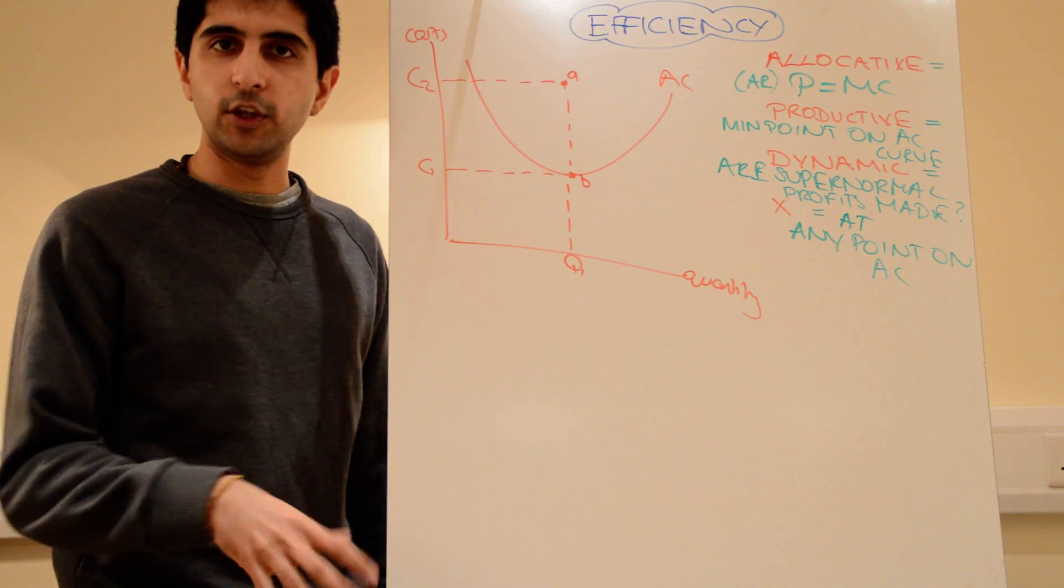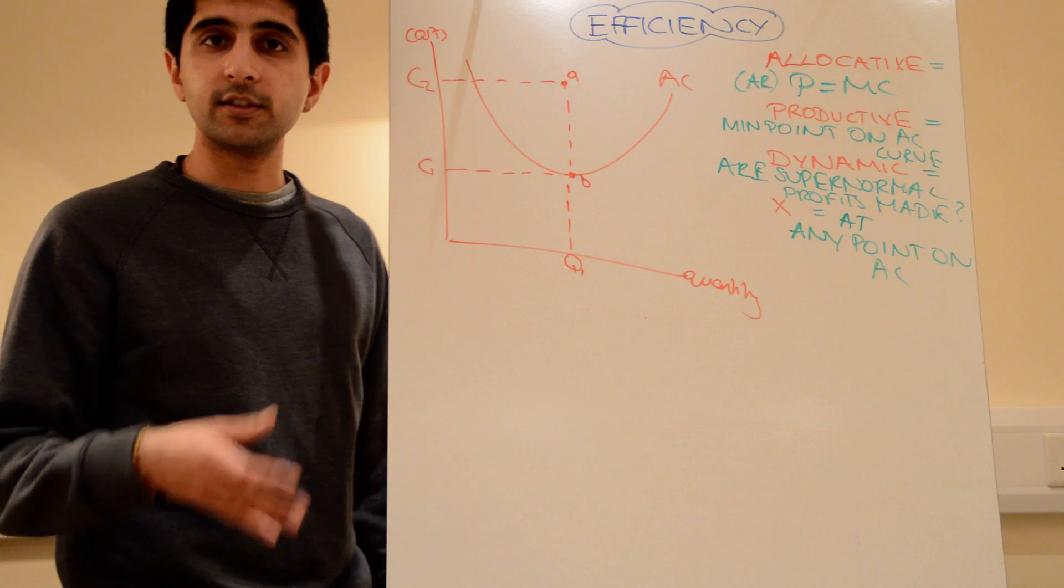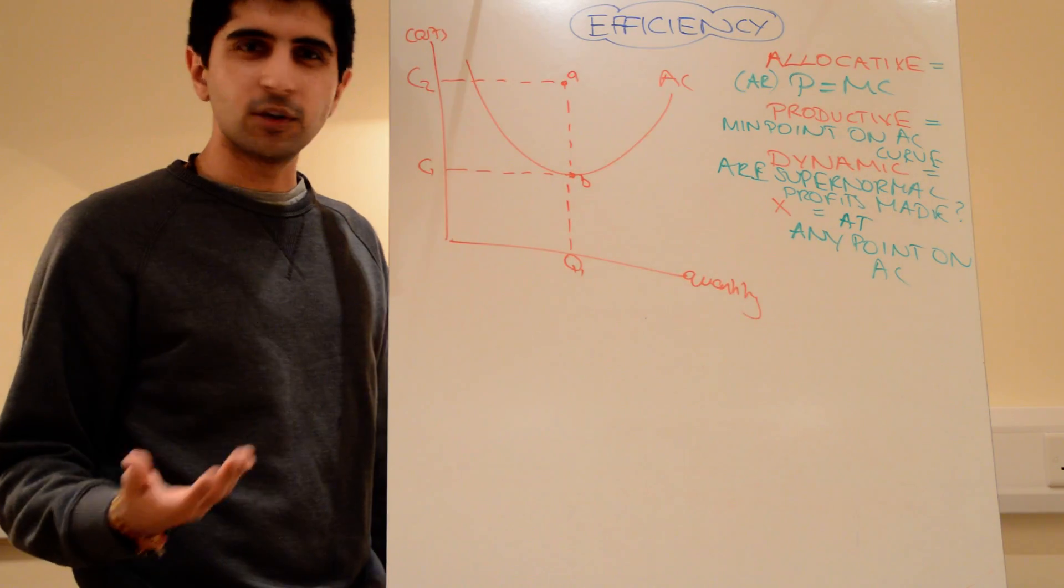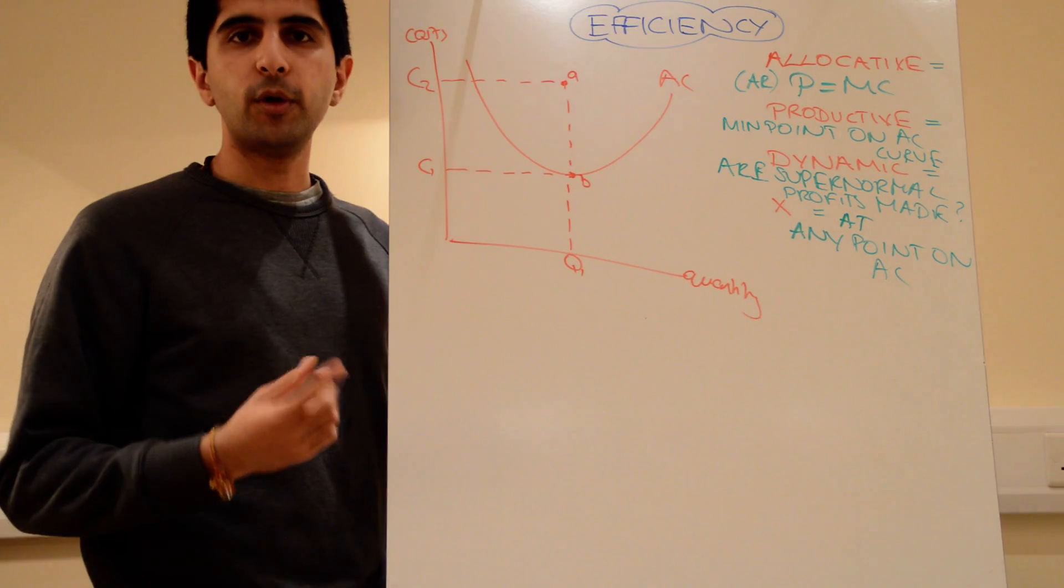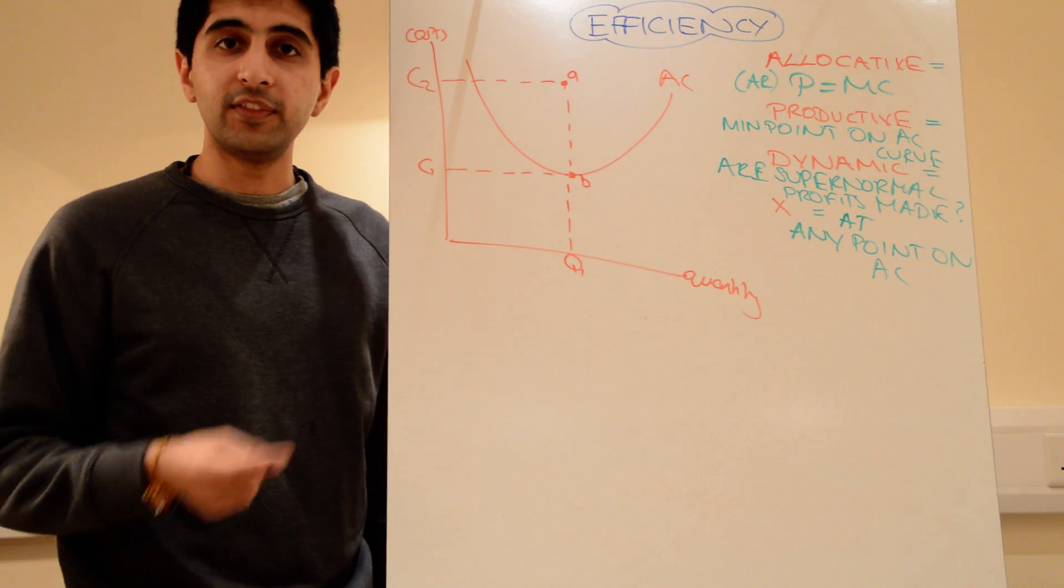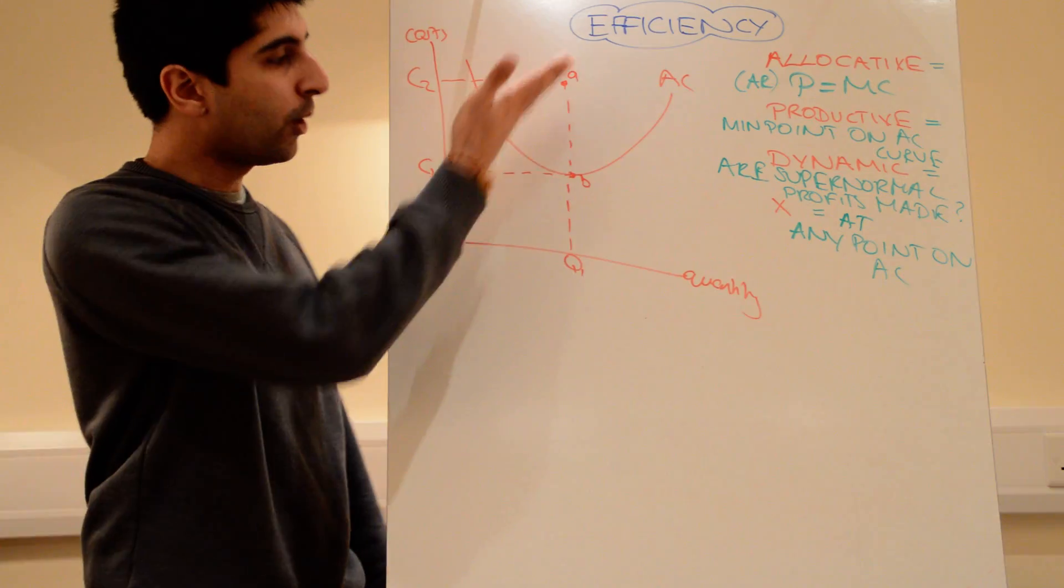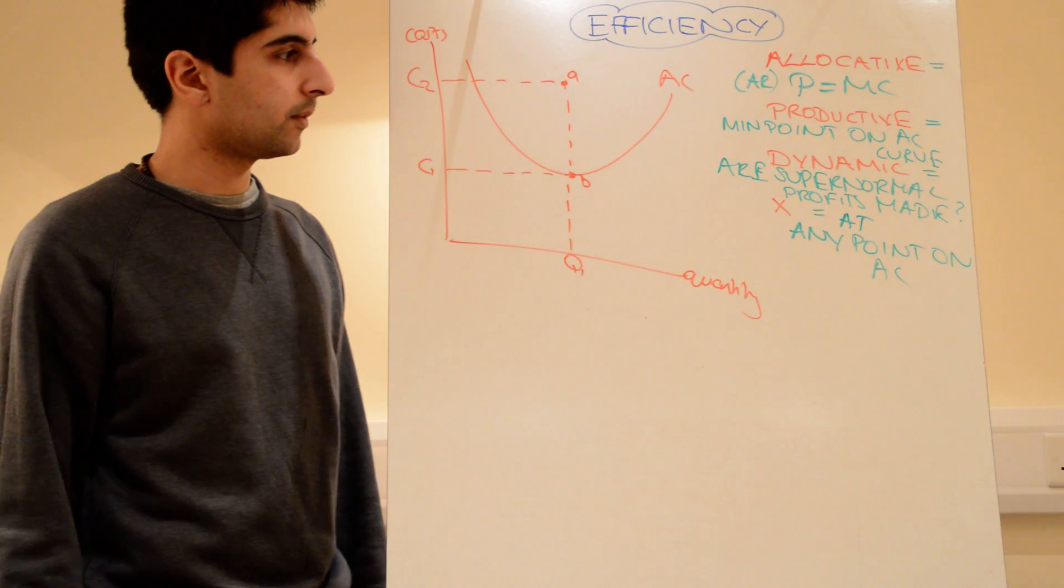Also in state sector organizations, health sector, for example, in the UK, the NHS, the education sector in the UK, you could say it's very X-inefficient. Why? Because there's no profit motive in state-run organizations. Therefore, there might be a lot of this X-inefficiency taking place. There is no motive to reduce costs as a result.